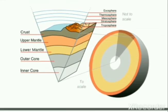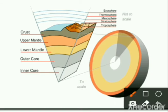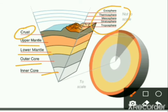Looking at the diagram of the differentiated Earth, you can see the inner core, outer core, lower mantle, upper mantle, and crust, along with the different layers of the atmosphere and the hydrosphere.